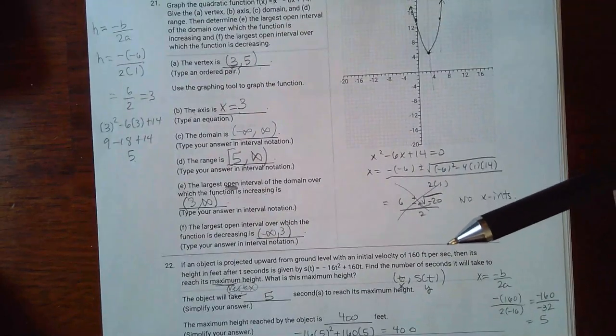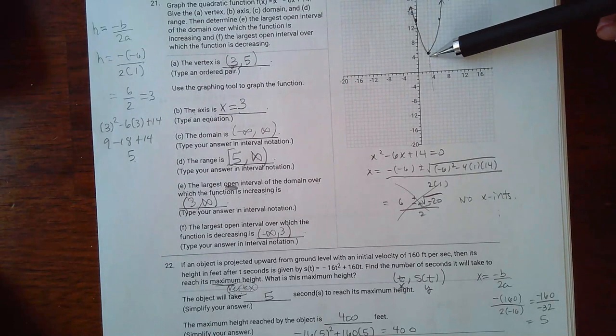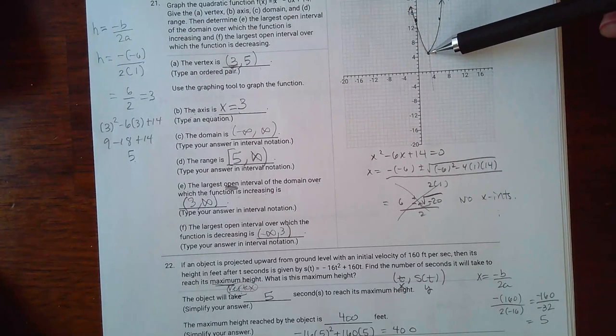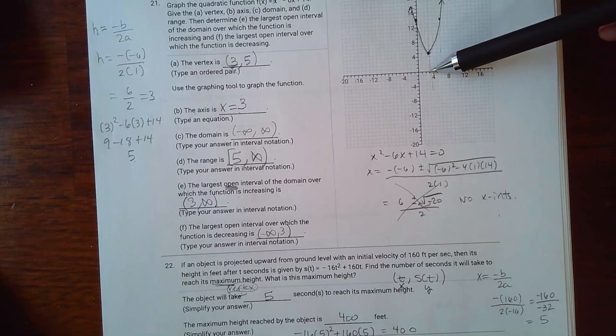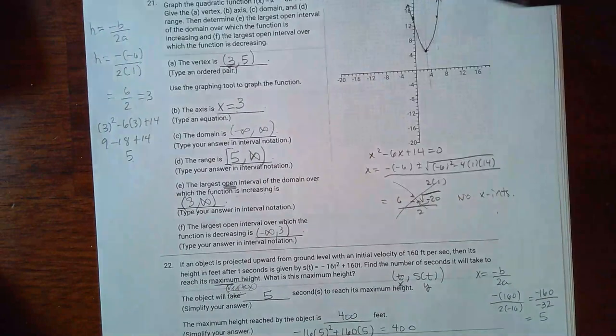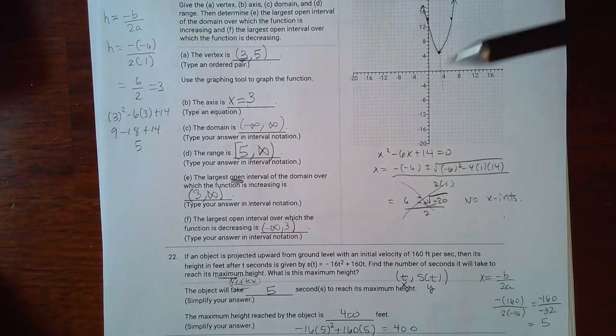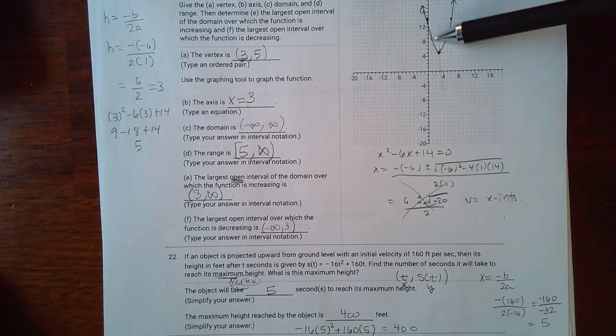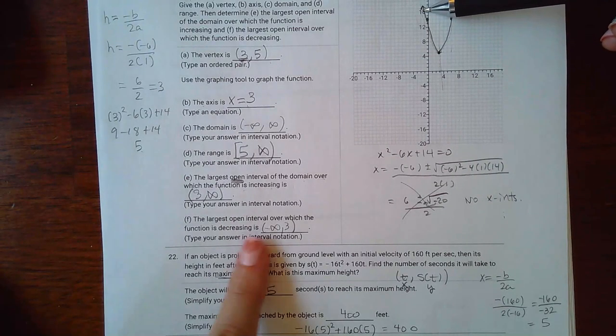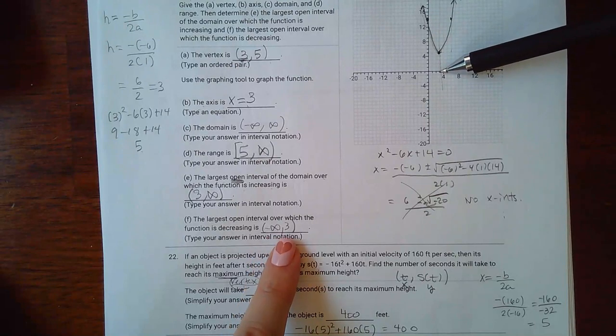For (e) we're doing the open intervals for which it's increasing, so here it's decreasing and then it increases. So it increases over here which is x value of 3 all the way to the right which is infinity, and because it's open intervals it has to have parentheses. Now for decreasing that would be this side, so how far left does it go? To negative infinity, and then it stops here and that x value is 3.